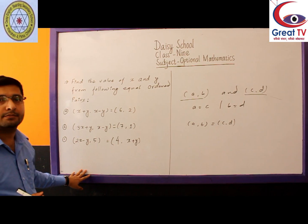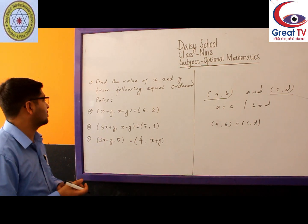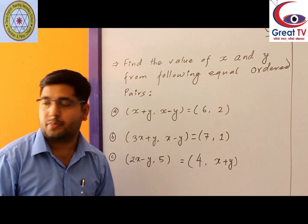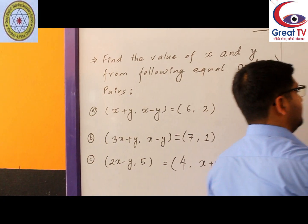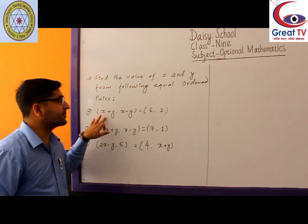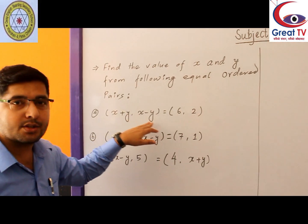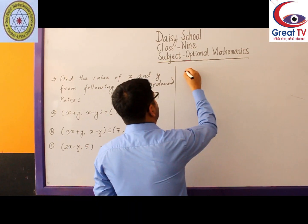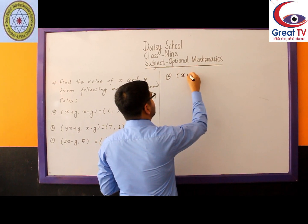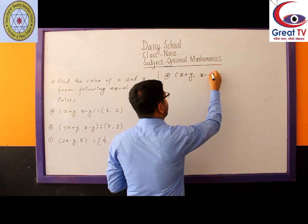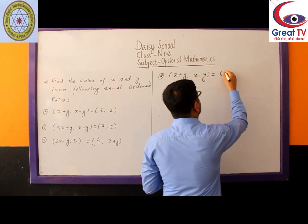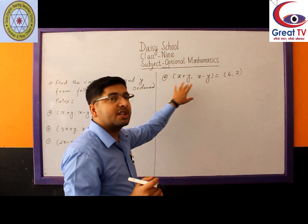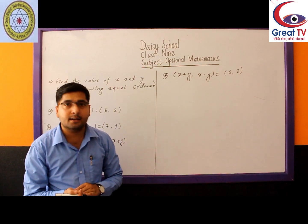Now let's enter our topic. We have three questions to solve, and we need to find the value of X and Y from each. For the first question, we are given the ordered pair (X+Y, X−Y) = (6, 2). We have two equal ordered pairs, and from them we must find X and Y.